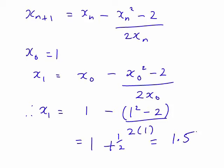So, therefore, x₁ = 1.5. We would expect this to be closer to the solution of x² - 2 = 0 than our initial guess of 1.